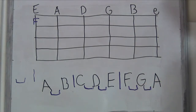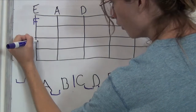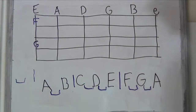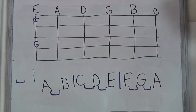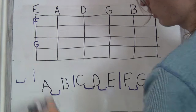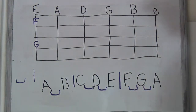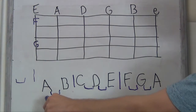F to G is a whole step, which means we're moving two half steps — that's two frets up. F to G is right there. G to A is a whole step. We could imagine that going below this fretboard here. A would be on the fifth fret up there. But we've also got open A, so we're just going to look at that one for now.